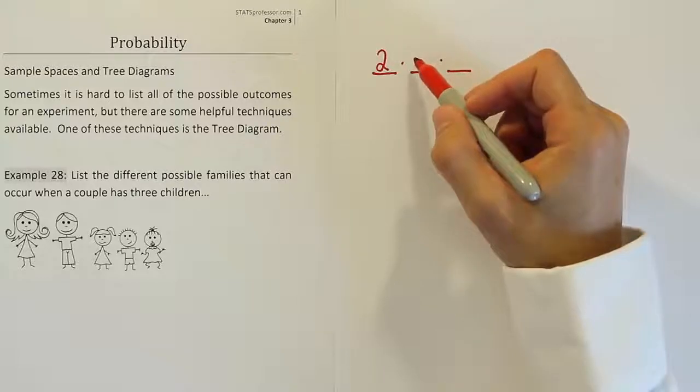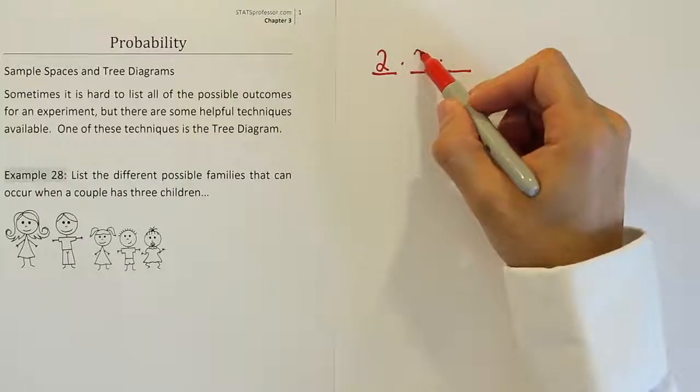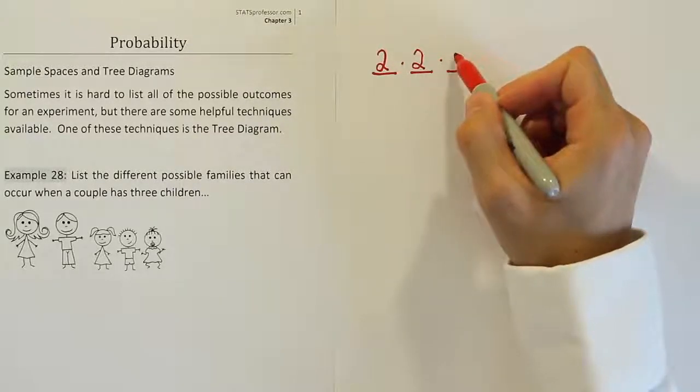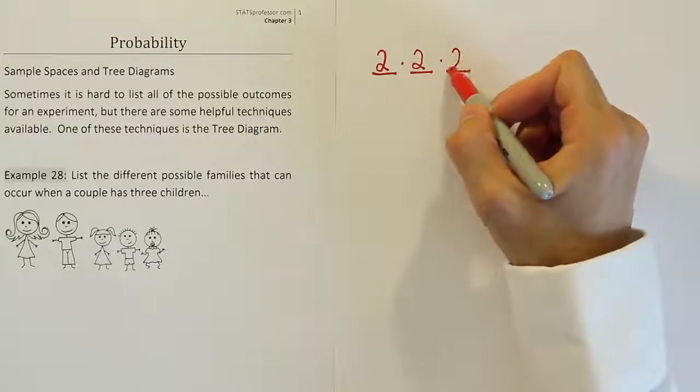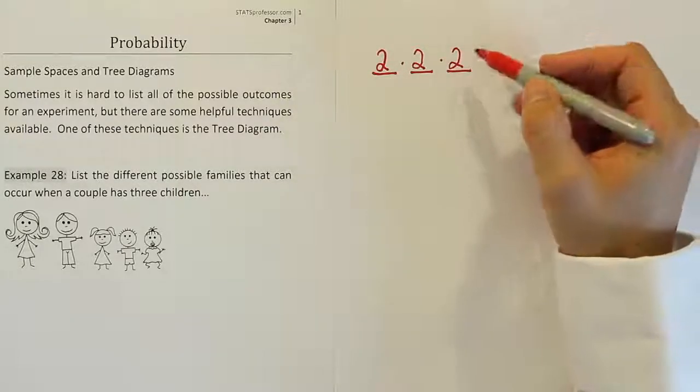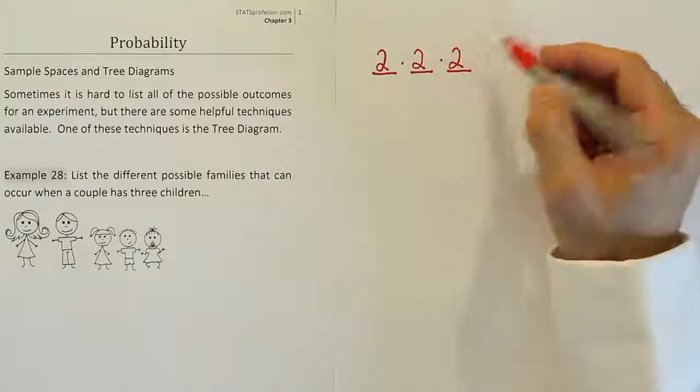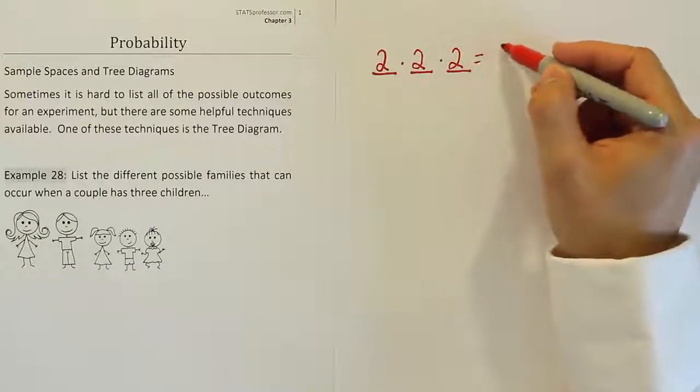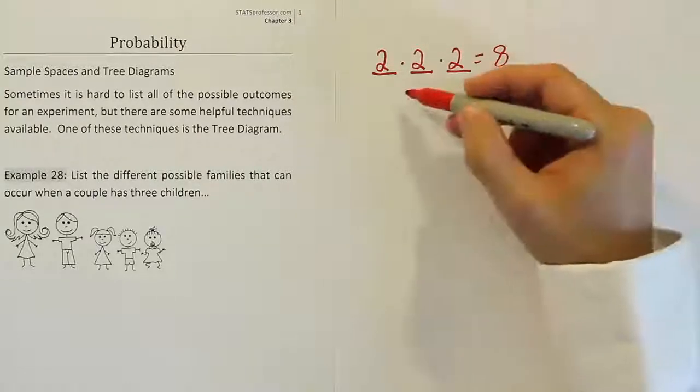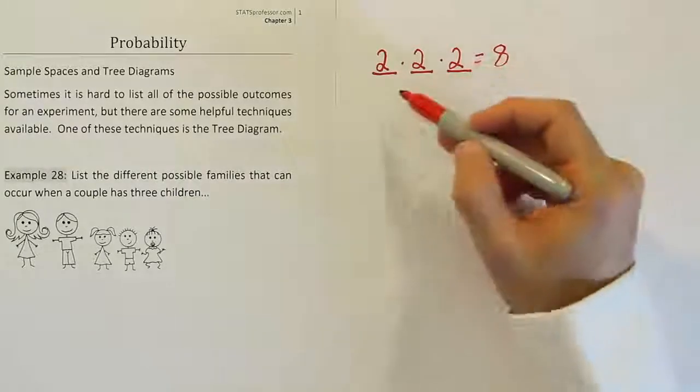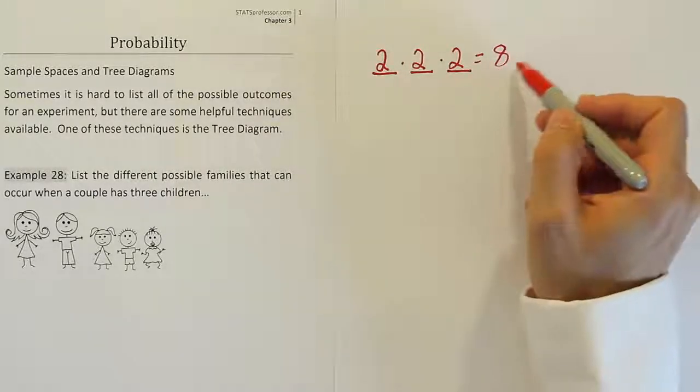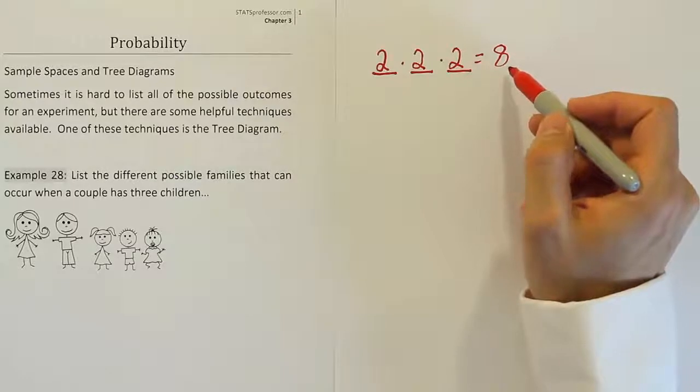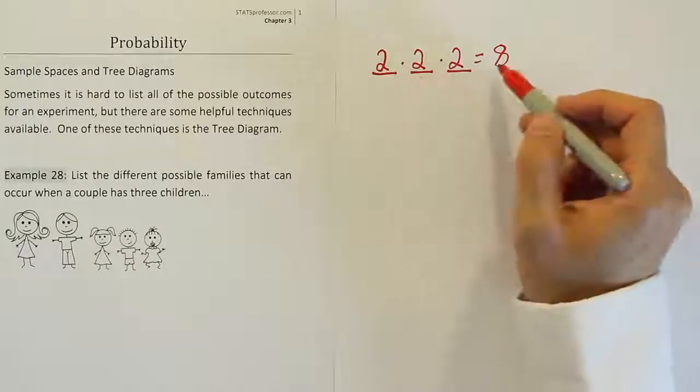Same for the second birth. It'll be two, because it's either a boy or a girl. And same for the third birth, it's either a boy or a girl, so therefore it's two possible outcomes for the third birth. Multiplying all these together will give us eight possible outcomes for the overall experiment. This rule that I just used to derive the number of total possible outcomes we'll learn later. The rule is called the fundamental counting rule.